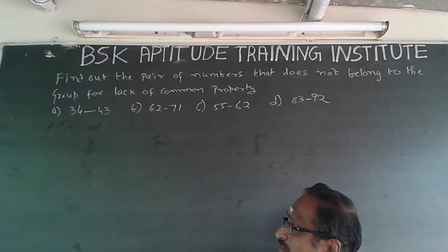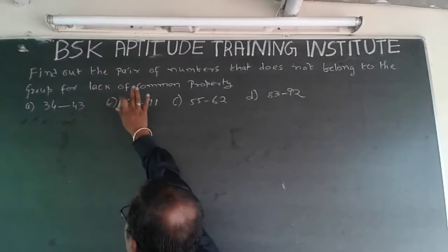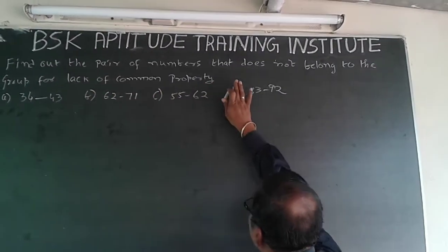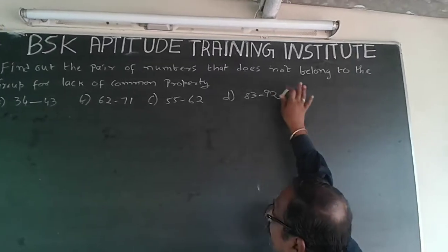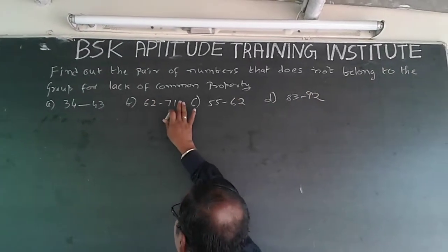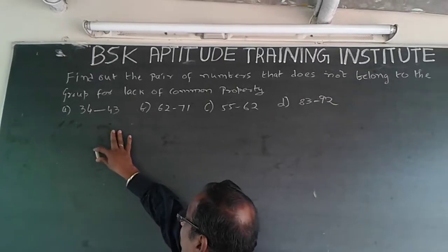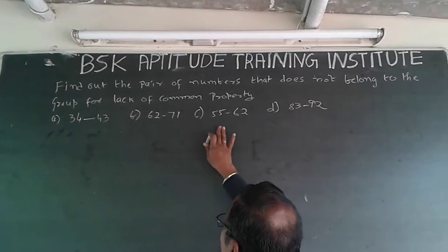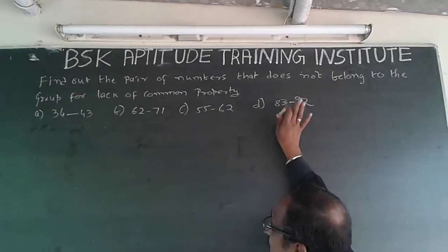Now, I am going to have a very simple question. Find out the pair of numbers that does not belong to the group for lack of common properties. The numbers are 34, 43, 62, 71, 55, 62, and 83, 92.